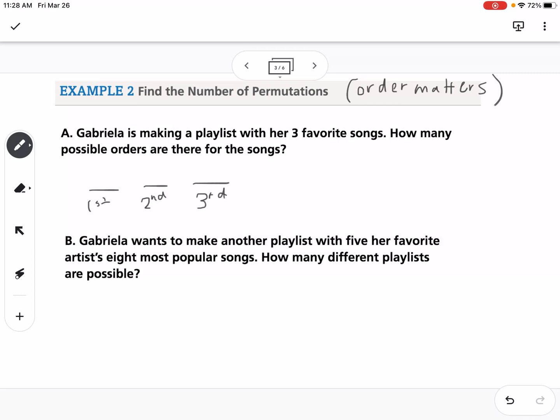If I'm placing these and order matters, there are three different songs I could choose to place in that first spot. Then, because one of them will already be taken with the first spot, if I go to the second spot, there's only two choices left. And then if I've placed the first and second song, there's only one song left for that third spot. So we multiply these together.